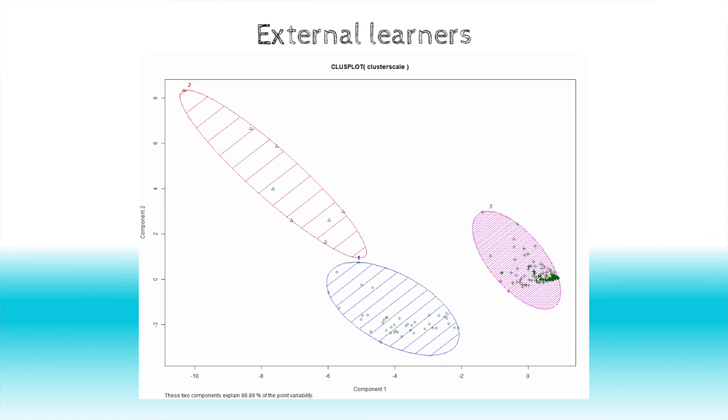The second case is the external learners. The clustering algorithm came up with three clusters. Cluster number one includes 42 participants. Actually, this group has low writing frequency, but a higher certification ratio, which is 76%, and the total number of quiz attempts was high.